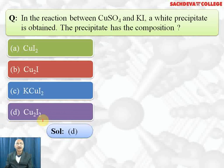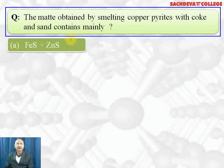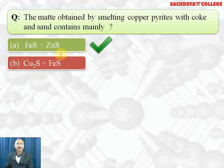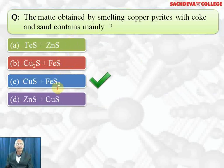The metal obtained by smelting copper pyrites with coke and sand contains mainly Cu2S plus FeS. Correct answer is B part, it contains Cu2S and FeS.